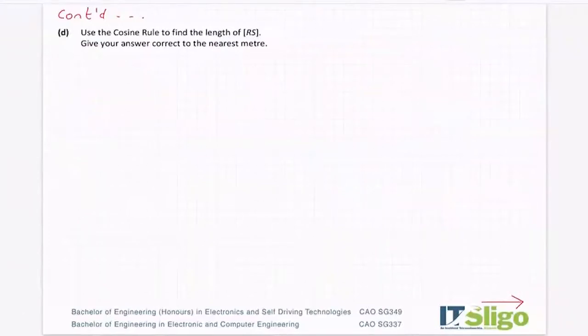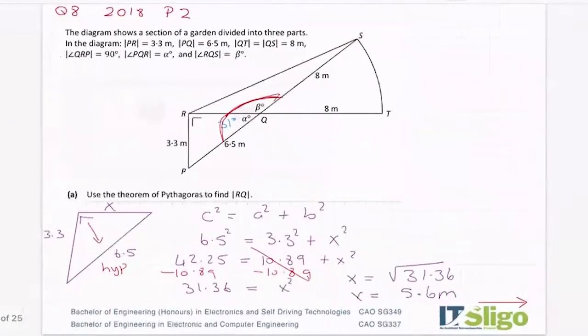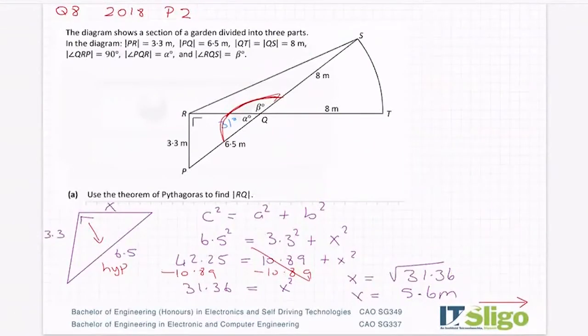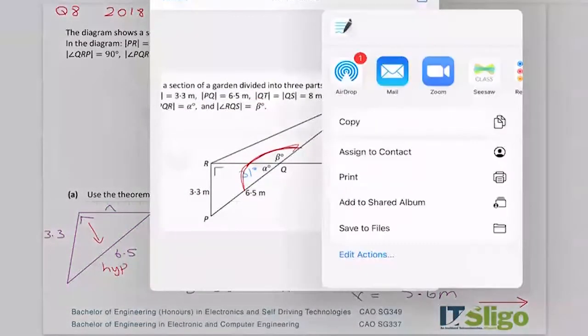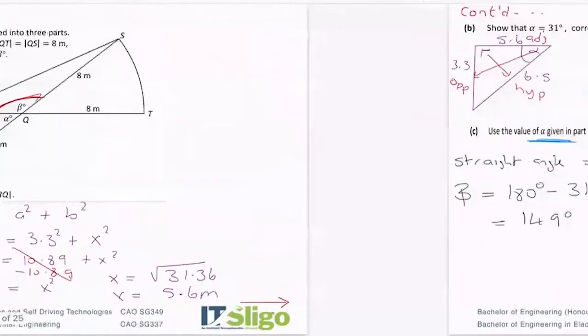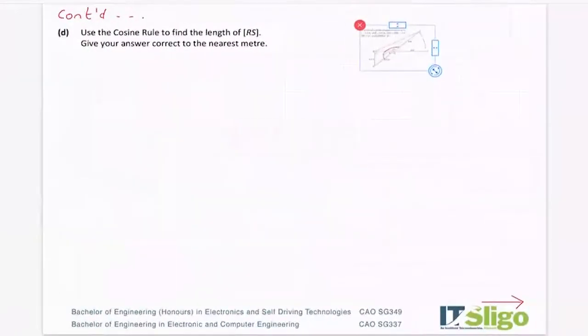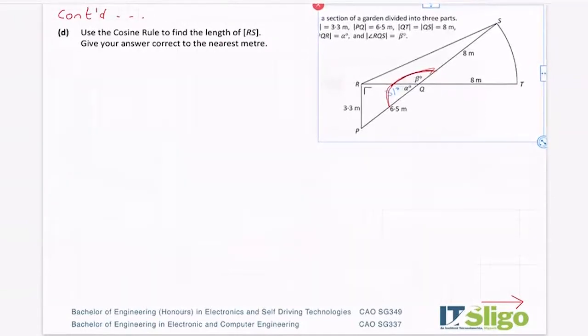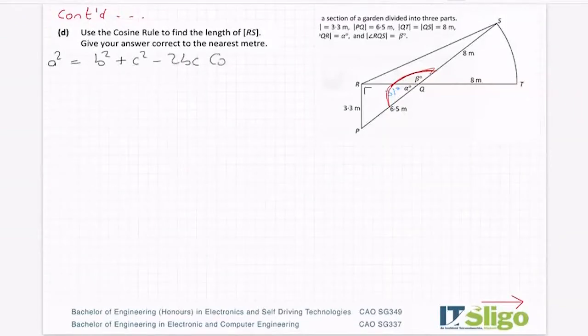Use the cosine rule to find the length of RS. Give your answer correct to the nearest meter. So let's see if I can take the diagram, if it'll take for me. Right, use the cosine rule to find the length of RS. So that's that side up there. Give your answer correct to the nearest meter. Well, the first thing I would do is because they've told me it's the cosine rule, let's write it down. And let's take the marks for that. Right.